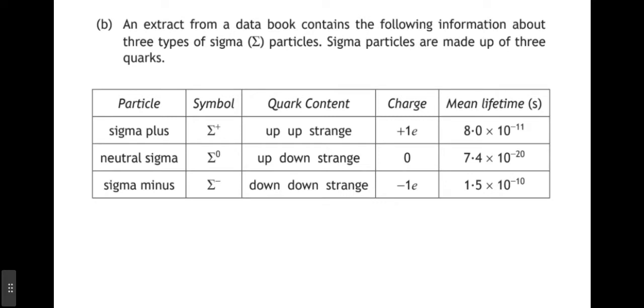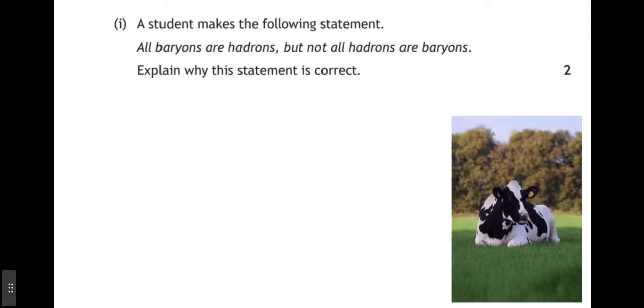Part B, an extract from a data book contains the following information about three types of sigma particles. Sigma particles are made of three quarks and we can see information about the sigma plus, the neutral sigma and the sigma minus. We can see their symbol, their quark content, their charge and their mean lifetimes.